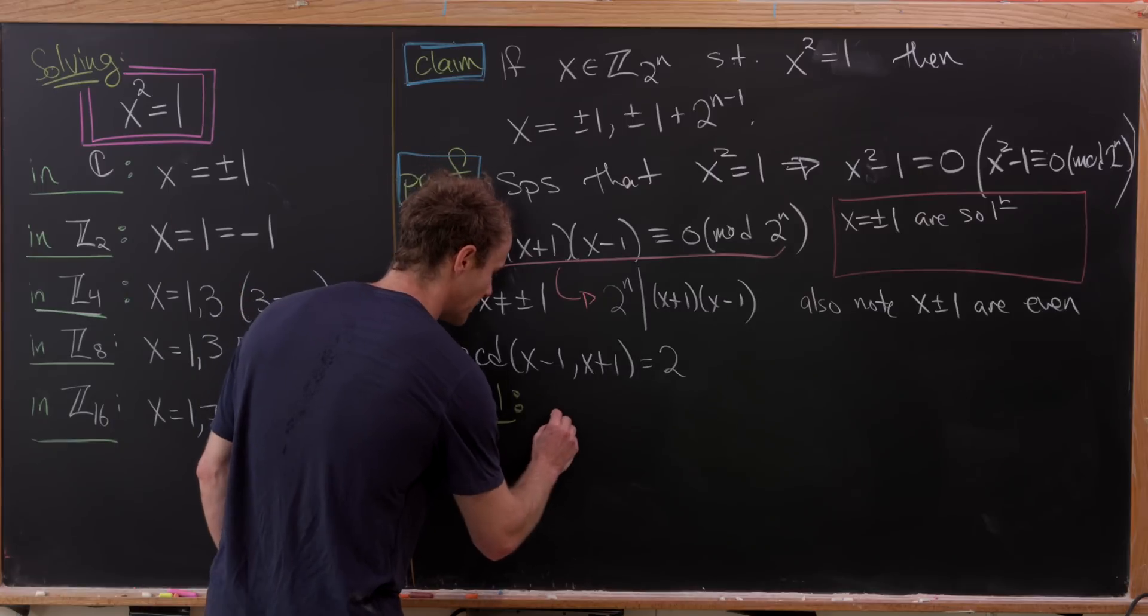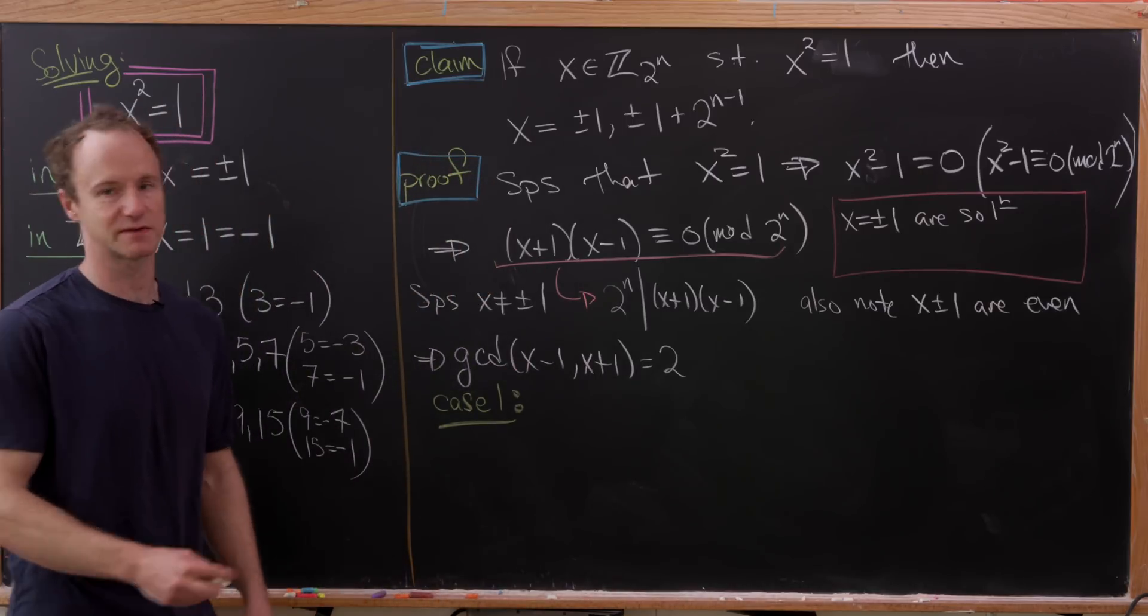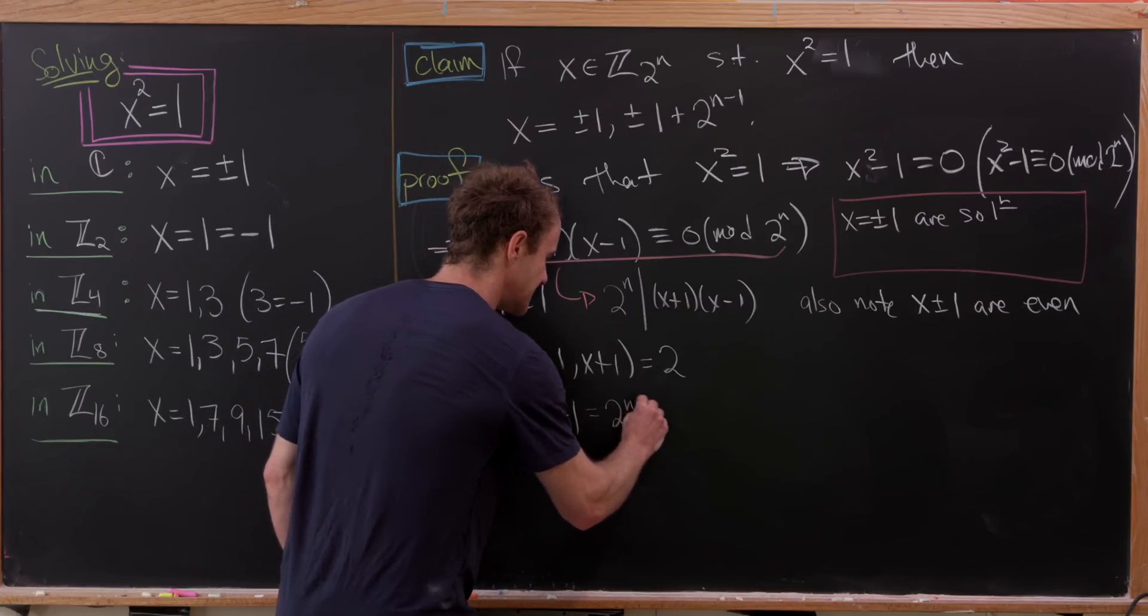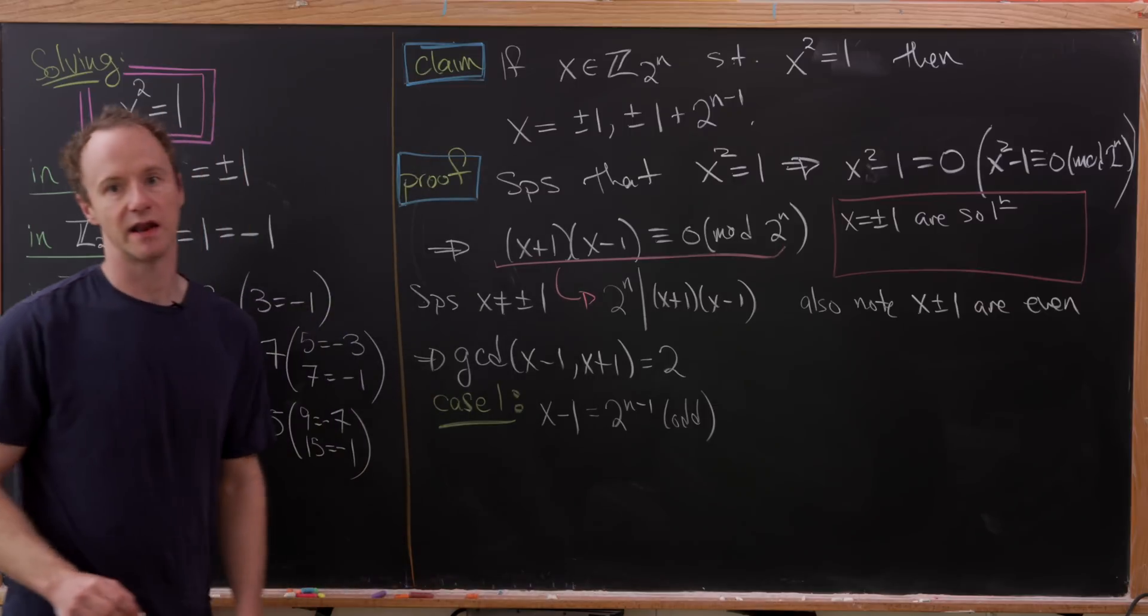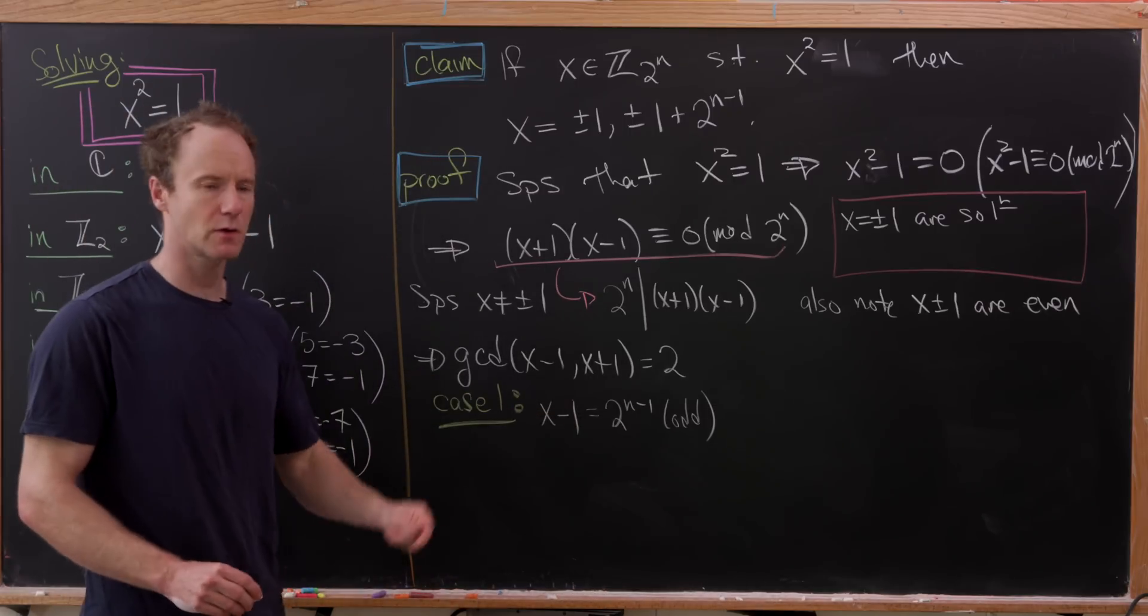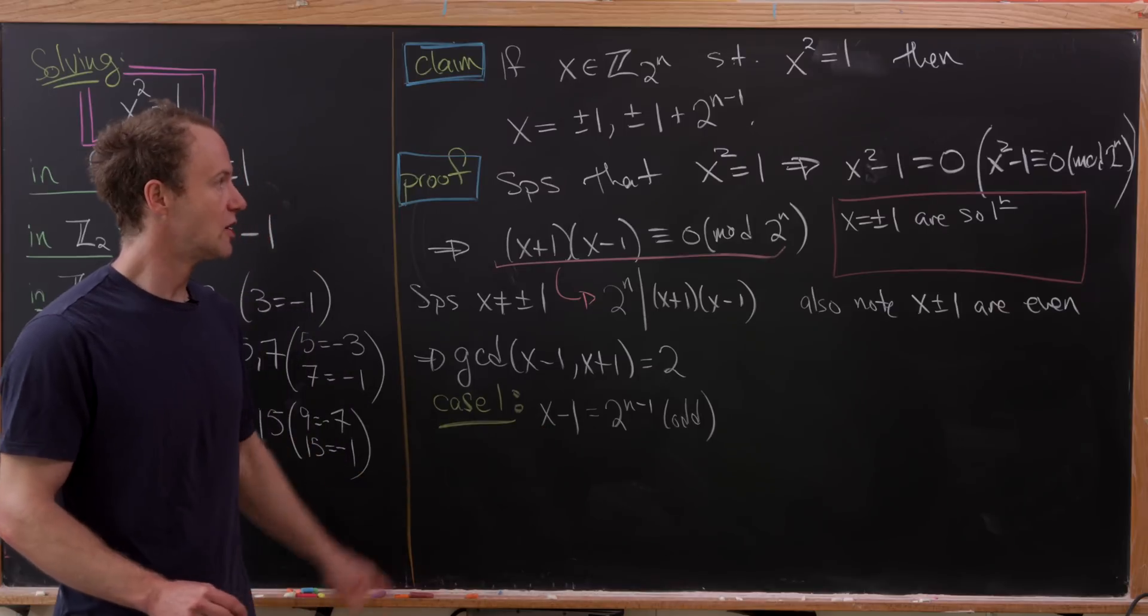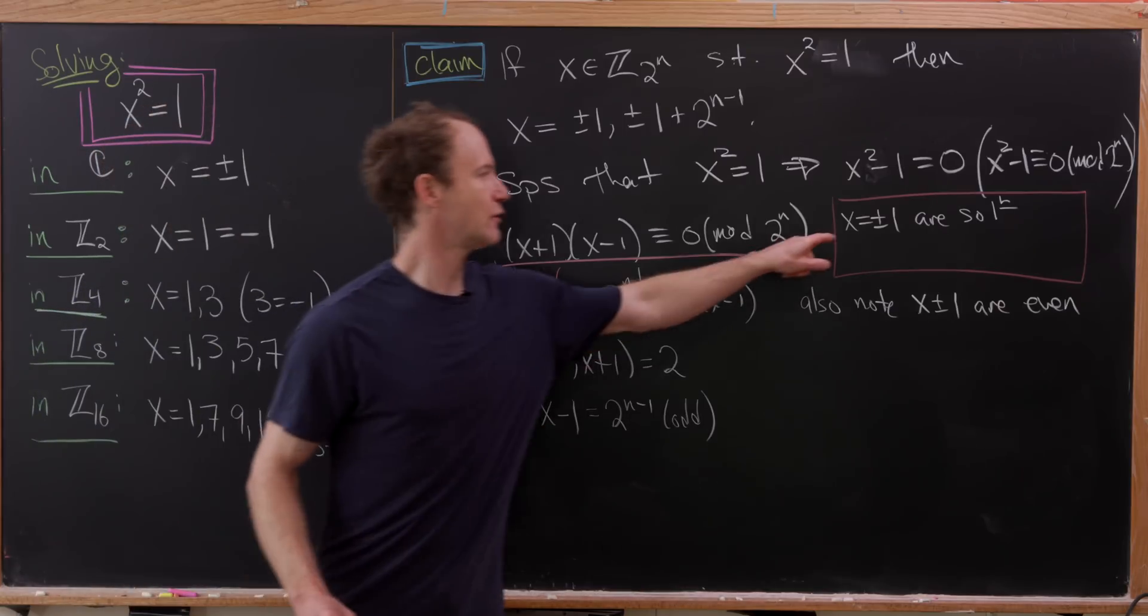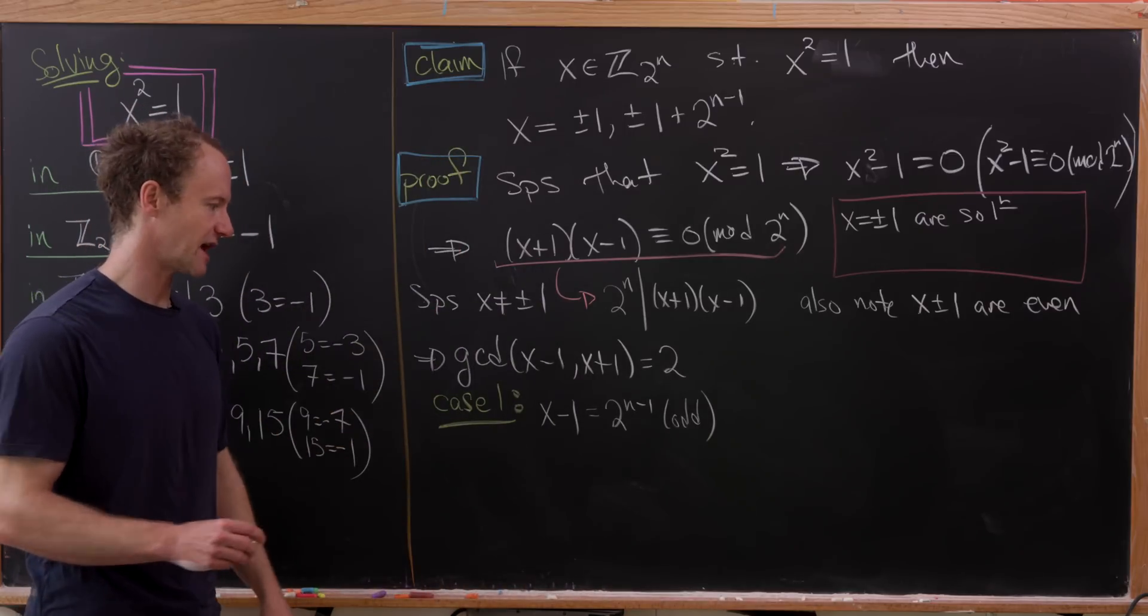And this first case will be that 2ⁿ⁻¹ is a factor of x-1. In other words, we can write x-1 as 2ⁿ⁻¹ times some odd number. And how do we know it's an odd number? Well, if it were an even number, then x-1 would already be 0 mod 2ⁿ. And then we'd be back at our original solutions that we're supposing are not the case.